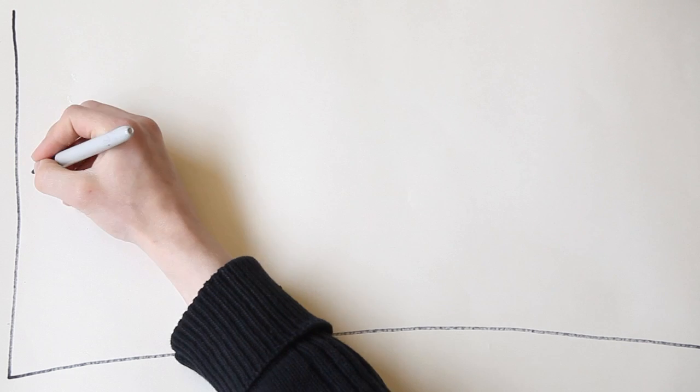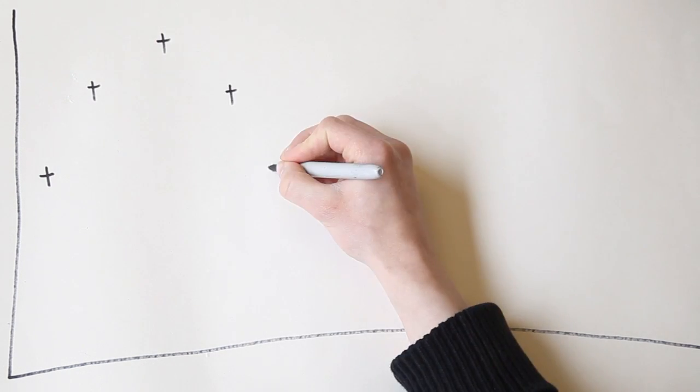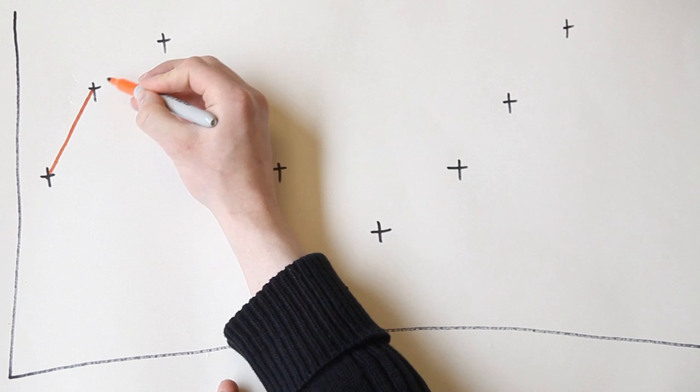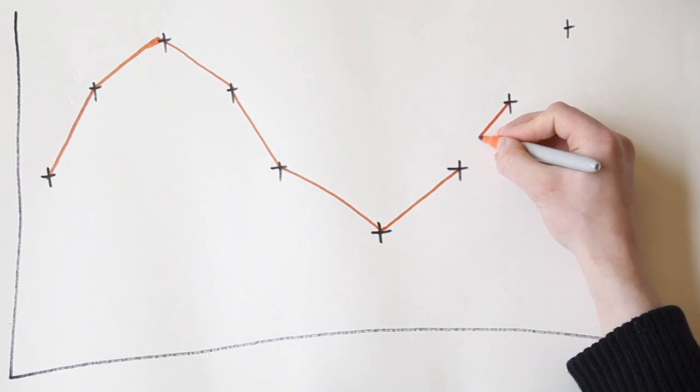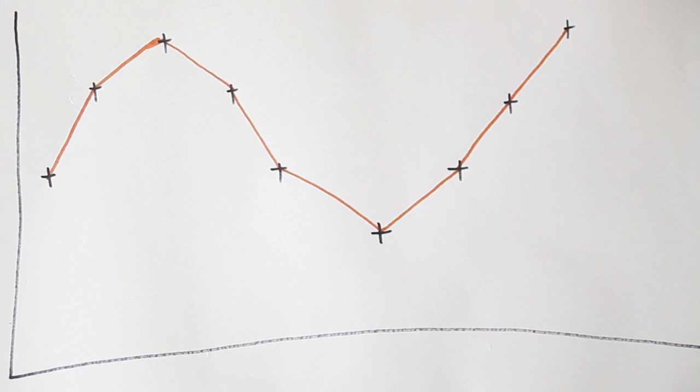So now we have a set of sample points, and if you connect them up, you get a waveform vaguely like the original, but really blocky, and it would sound horribly distorted if you actually heard it. So how do we convert these sample points back into a natural sounding audio file?